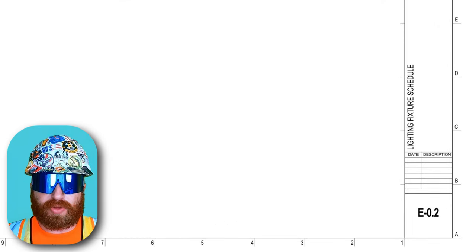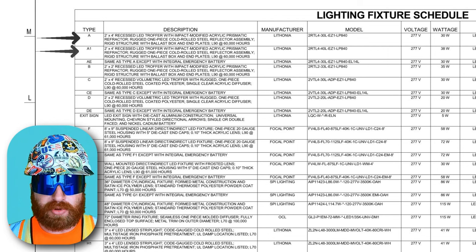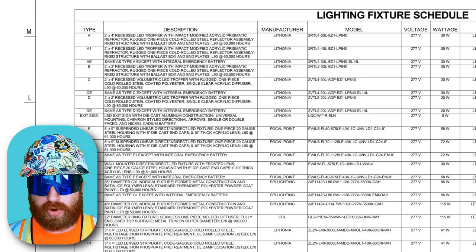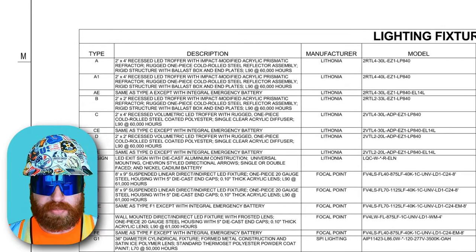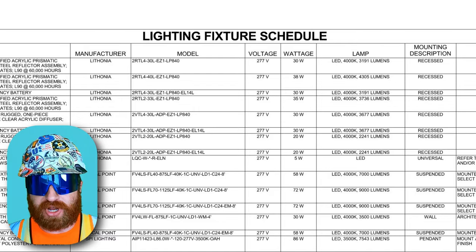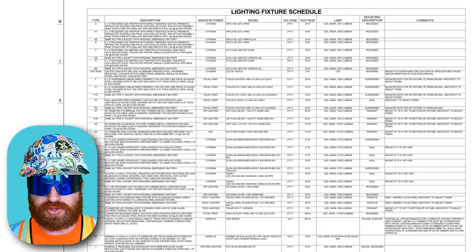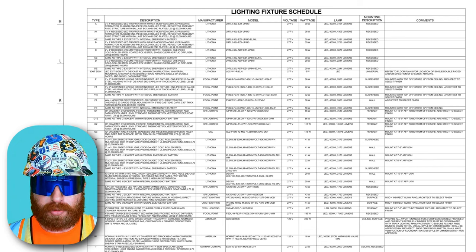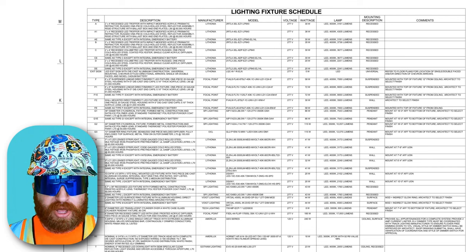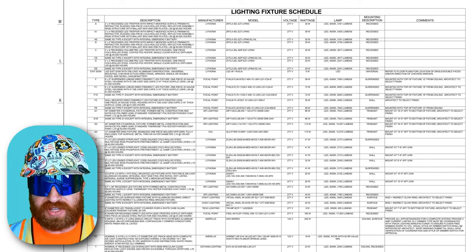Moving on to E0.2, the lighting fixture schedule. Each light has a fixture type designation — a letter or numbering system — because you can't pack all the words for these fixtures on the actual drawings. To know the light type, size, manufacturer, model, voltage, wattage, lamp type, and mounting type, you cross-reference with this page. If you want to know exactly what the fixture looks like, copy the model number into Google. It's also good practice for the electrical contractor to double-check that the lighting system is coordinated with the ceiling grid system, since ceiling grid systems come in different sizes and lights are designed for different grids.